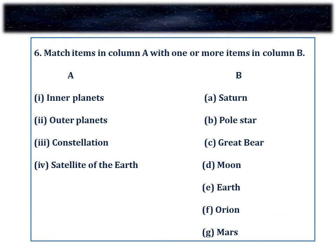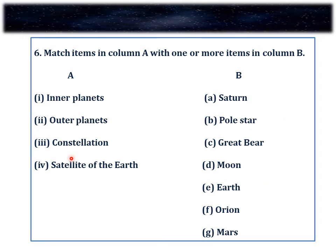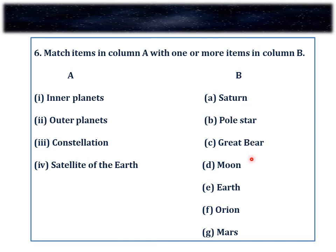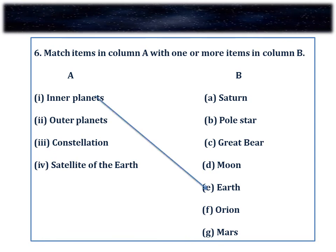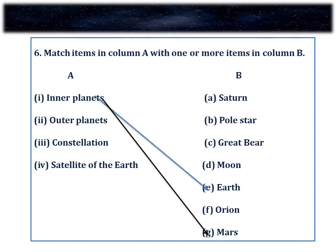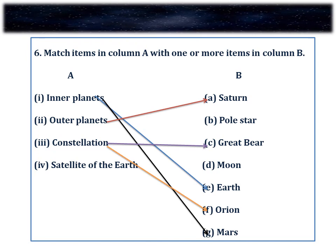Question number 6. Match the items in column A with one or more items in column B. Column A has inner planets, outer planets, constellations and satellite. Column B has Saturn, Polestar, Great Bear, Moon, Earth, Orion and Mars. Inner planets: Earth and Mars. Outer planets: Saturn. Constellations: Great Bear (Big Dipper) and Orion. Satellite of Earth: Moon.